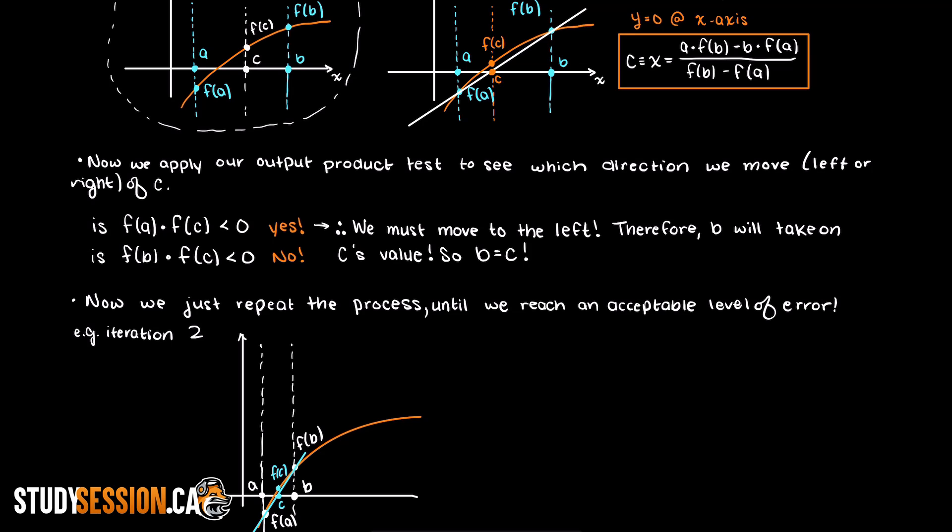And lastly, we can measure the error through the absolute of a minus b, just like we did for the bisection method.